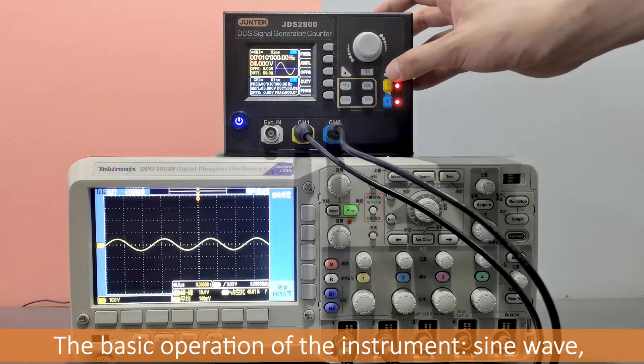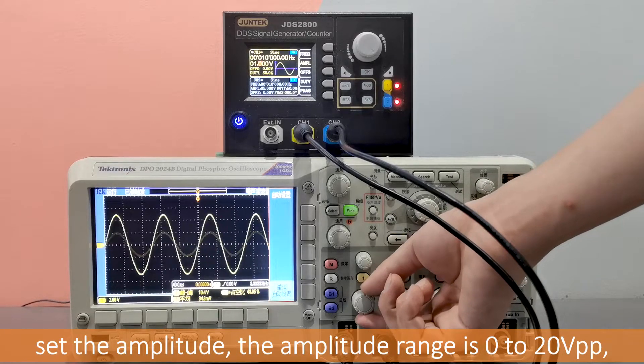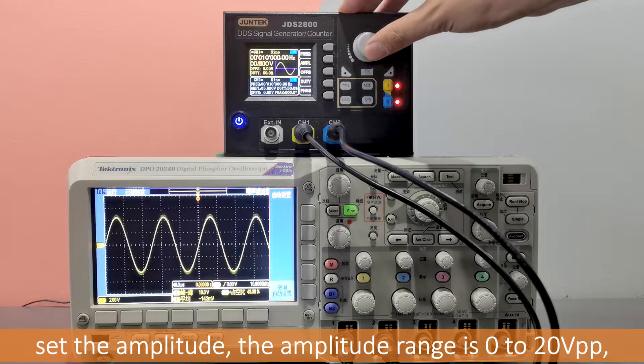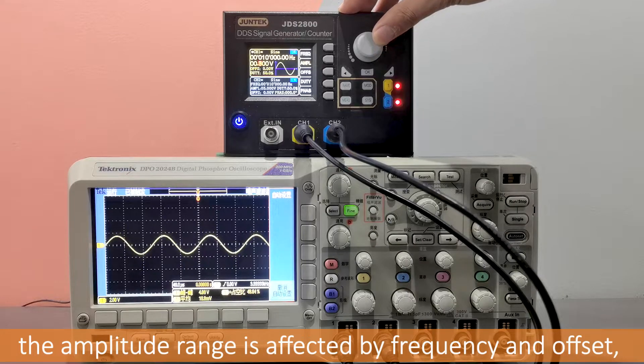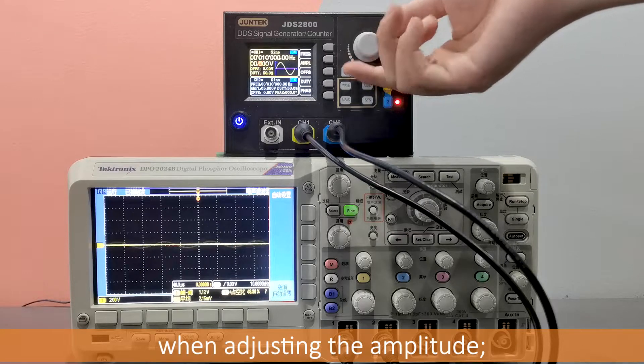The basic operation of the instrument: sine wave, set the amplitude. The amplitude range is 0 to 20 VPP. The amplitude range is affected by frequency and offset. You can see the change of the waveform when adjusting the amplitude.